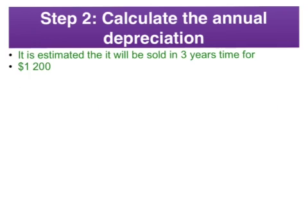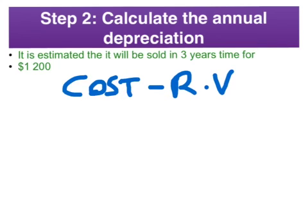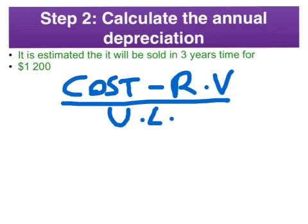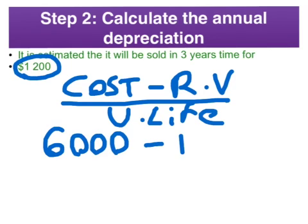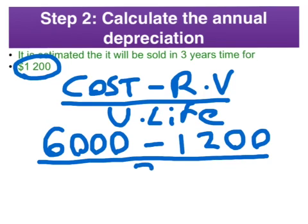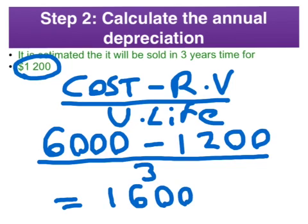Let's apply the formula to work out the cost of a full year's depreciation on this computer system. On our numerator we've got our cost minus our residual value, and our denominator is our useful life. Putting in the numbers: $6,000 cost minus the residual value of $1,200, divided by useful life of three years, gives us $1,600 per year.